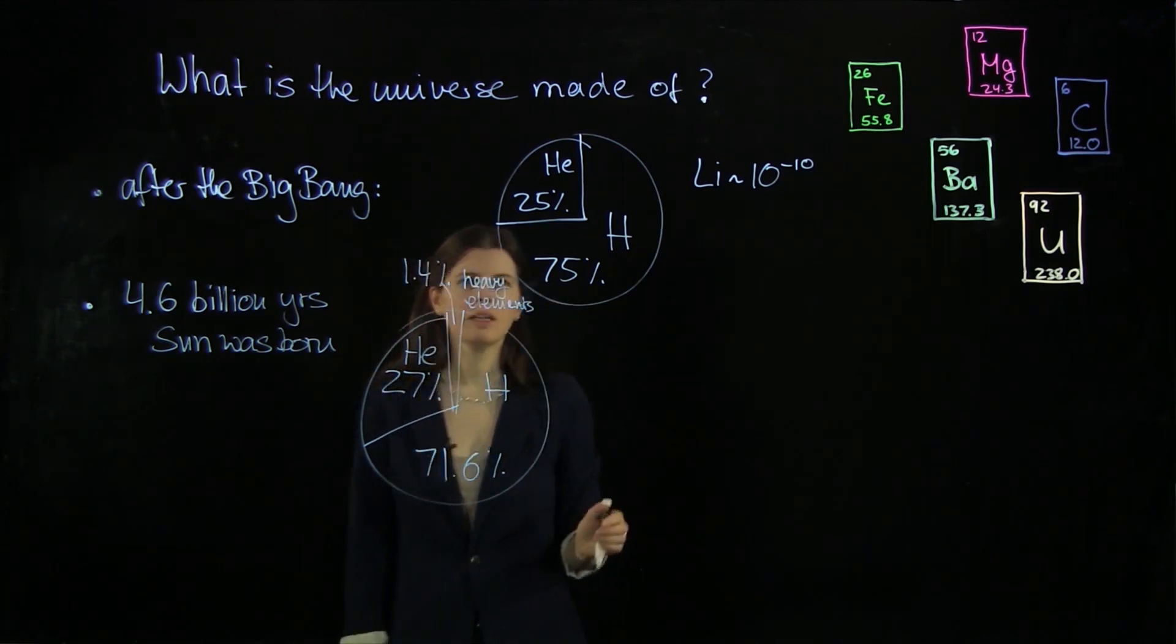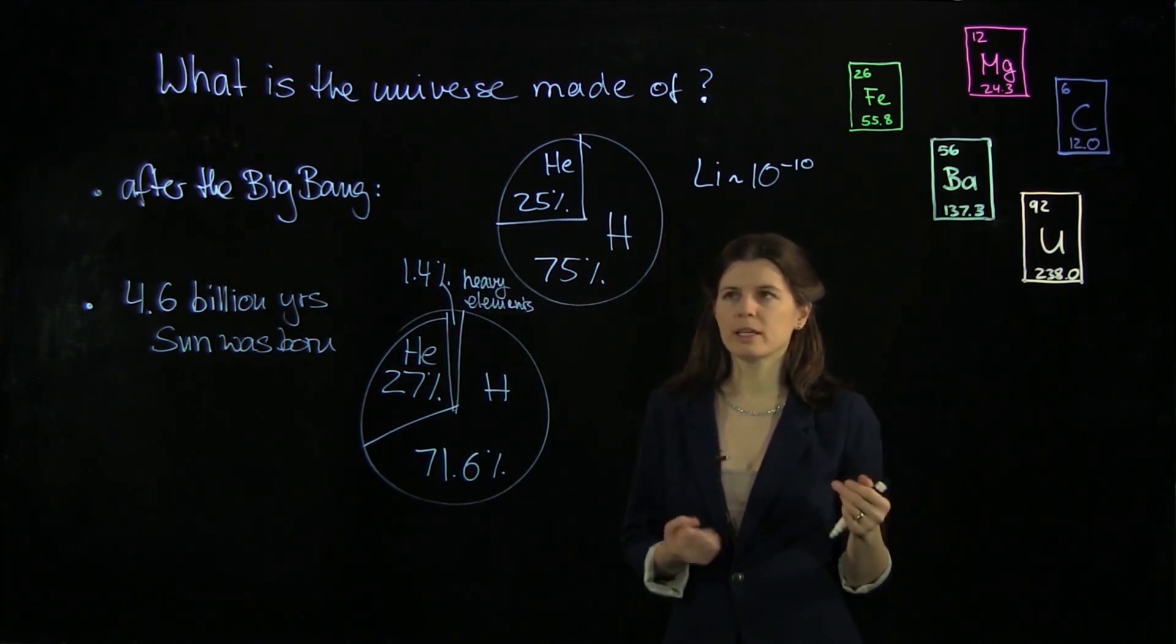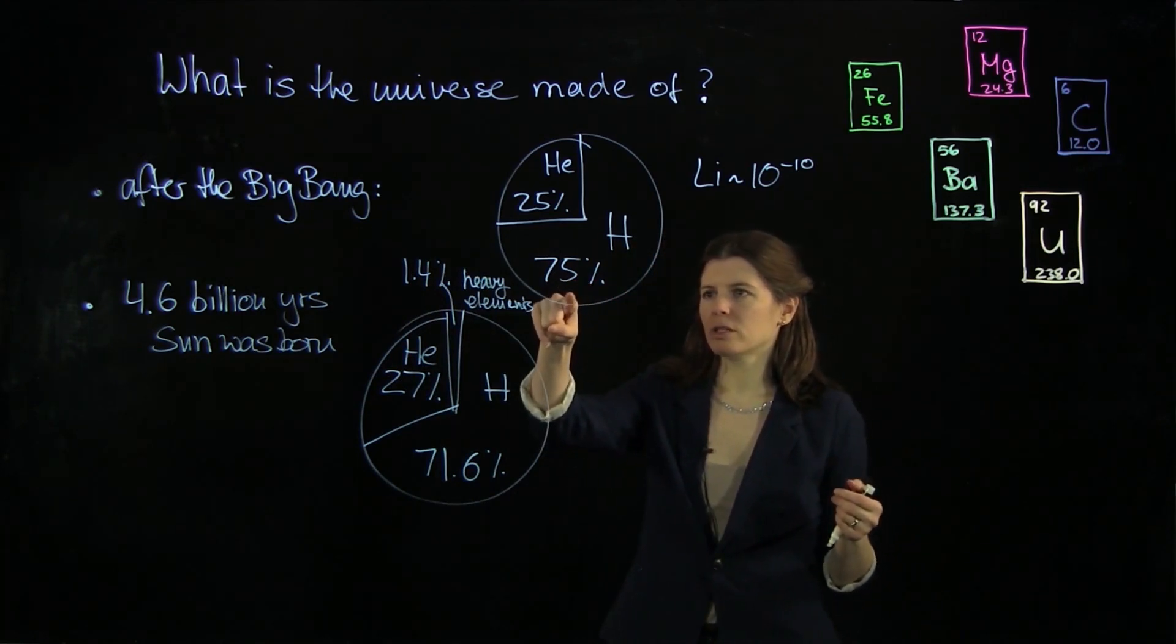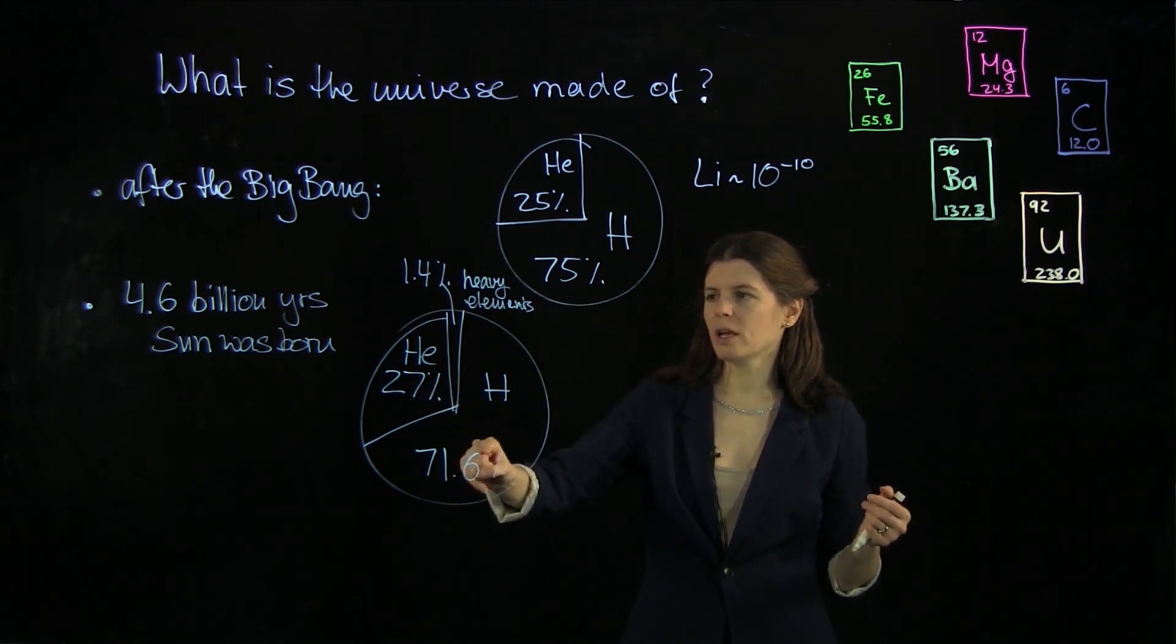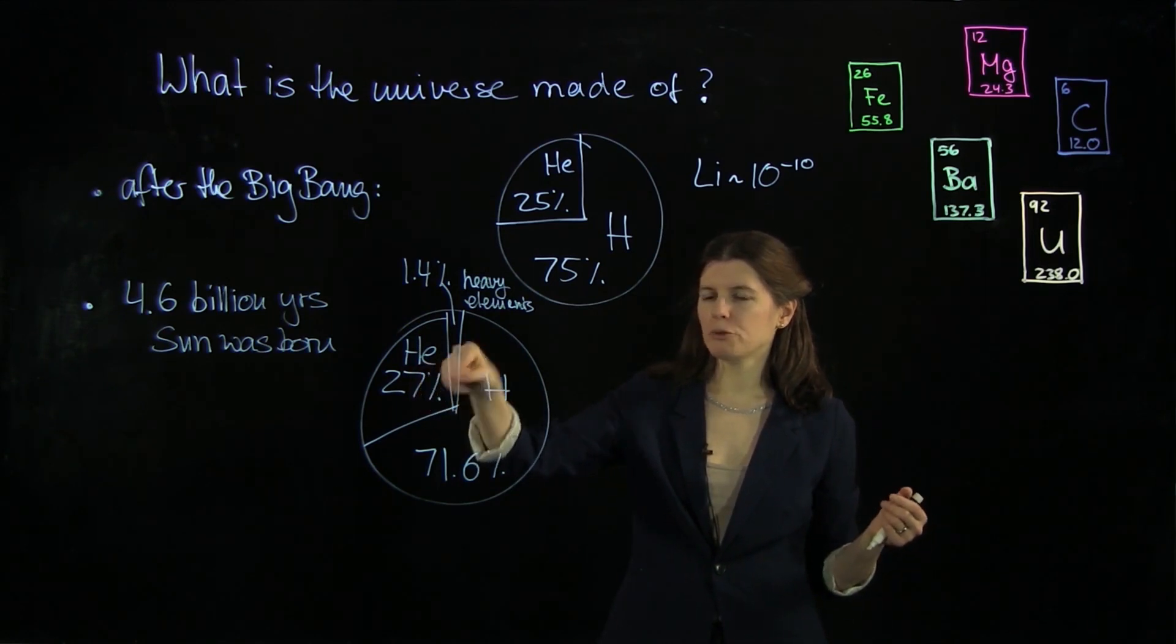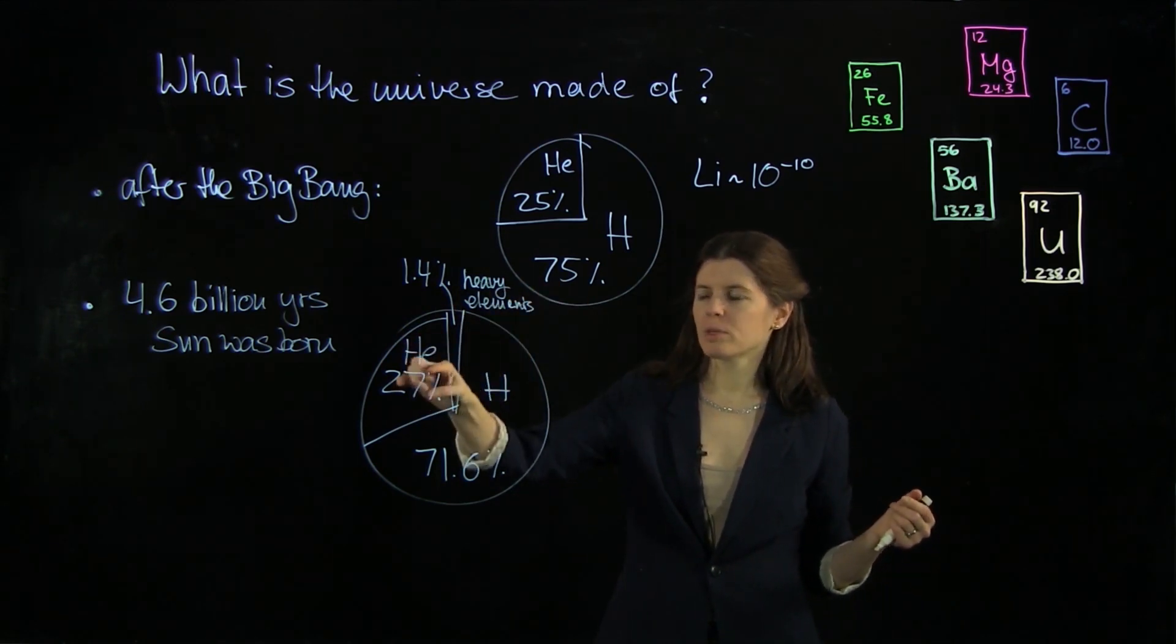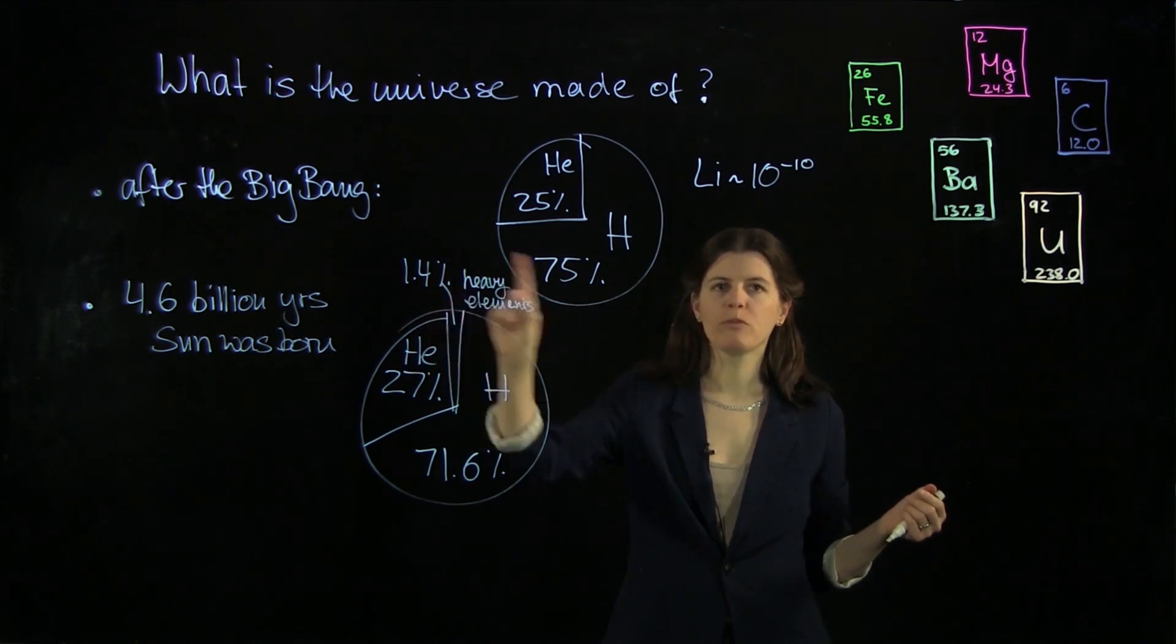And so what we can see, and again, we're going to go into more detail later, some of the hydrogen got converted into helium. So we have less hydrogen about 5 billion years after the Big Bang, a little bit more helium. And helium, through various steps, has been converted into heavier elements, a whole 1.4%.